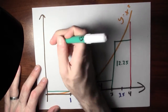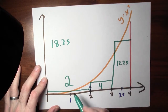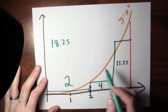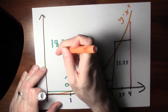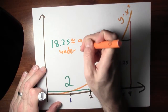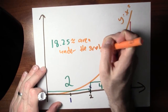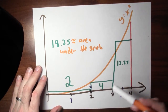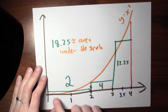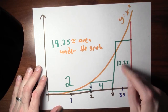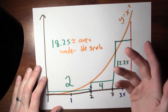Altogether, that means 2 plus 4 plus 12.25 equals 18.25, which is approximately the area under the graph. I've replaced this curved region with an approximation using these three rectangles, so I'm approximating the area of this curved region with just the area of these three rectangles, which turns out to be 18.25. That's an approximation, but we can do better.